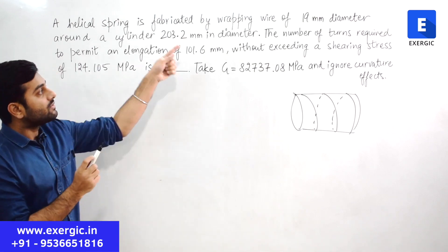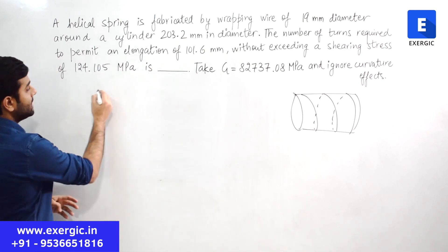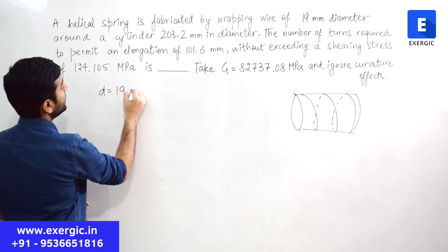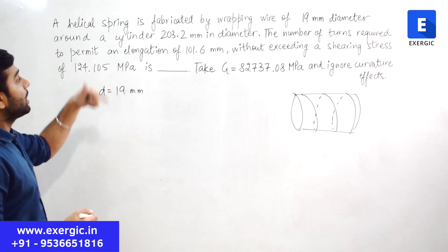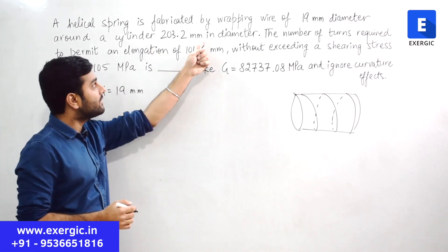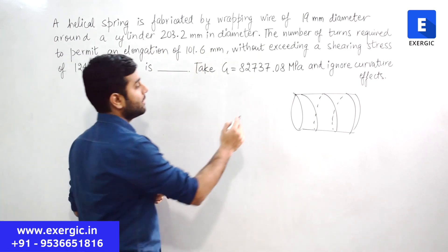The diameter of the wire of the spring is given to you as 19 mm. So small d is 19 mm and it is wrapped around a cylinder which is having this much diameter. This diameter here.